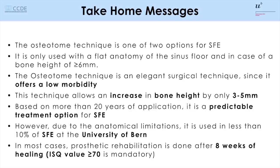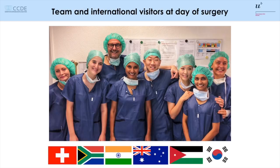In most cases, the prosthetic rehabilitation going straight to the final restoration is done after 8 weeks of healing when the ISQ value is 70+. Here you see the team who did the surgery — in the middle, Lira Rachman, who was the surgeon — supported by an international crowd of visitors and other guest postdocs in our department.